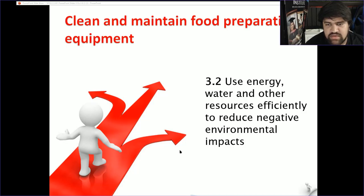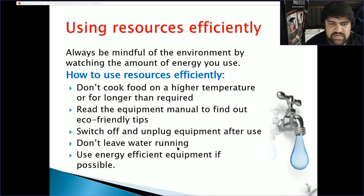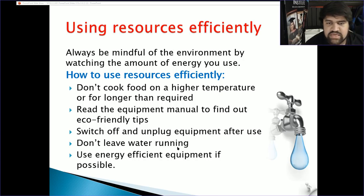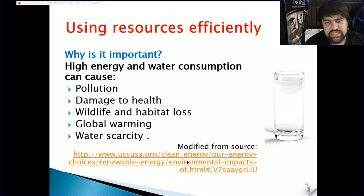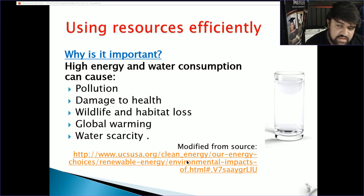Section 3.2 — Use energy, water and other resources efficiently to reduce negative environmental impacts. Always be mindful of the environment by monitoring the amount of energy and resources you use. Tips: don't cook food at a higher temperature or for longer than required; read the equipment manual for eco-friendly tips; switch off and unplug equipment after use; don't leave water running; and use energy-efficient equipment where possible. High energy and water consumption can cause pollution, damage to health, loss of wildlife habitats, global warming, water scarcity, and increased costs as resources are depleted.